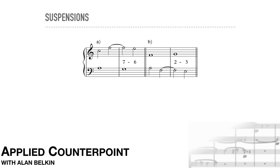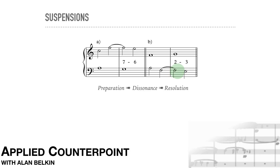In example A, the F arrives as a consonance in the first bar, holds over to become a dissonance — a seventh — in the second bar, and resolves down into another consonant on the next beat. The suspension is in the upper part here. In example B, the F in the lower part starts off as a consonant in the first bar, becomes dissonant when it's held over to the second bar, and resolves down to the consonant E.